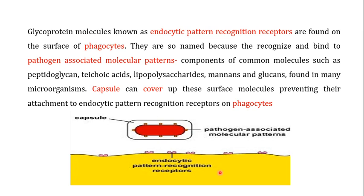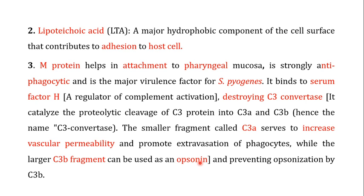On the surface of neutrophils there are endocytic pattern recognition receptors, which recognize pathogen-associated molecular patterns (PAMPs) present on the surface of bacteria. What the capsule does is mask these PAMPs, thereby stopping their interaction with the endocytic pattern recognition receptors and preventing phagocytosis by neutrophils. There are other important virulence factors as well.